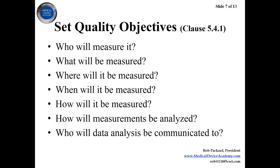If you're going to set quality objectives, the clause in the ISO standard is clause 5.4.1. The key elements for a good quality objective are: who will measure it, what specifically will be measured, where will it be measured, when and at what frequency, how — what tools will be used, whether an automated report or visual observation, how will it be analyzed (graph, t-test, run chart, log or linear plot), and who will the data analysis be communicated to. If the data just sits in a folder at your desk, that doesn't meet the requirements of a quality objective — it has to be communicated to the rest of the company.